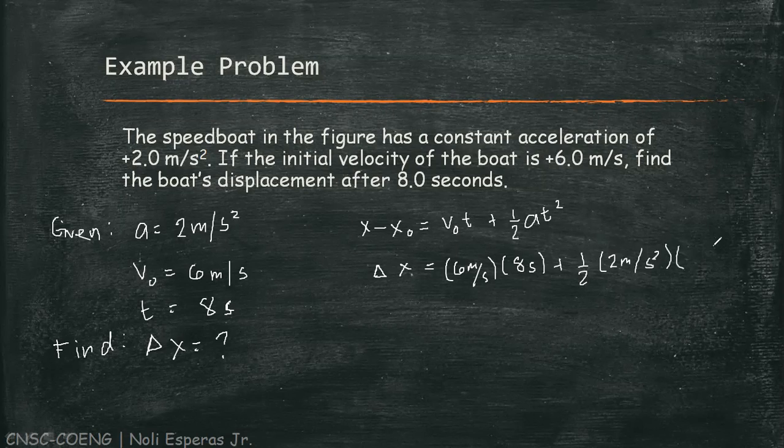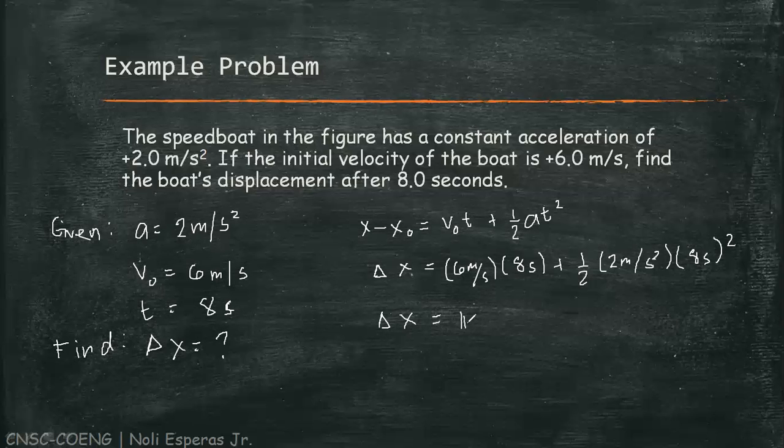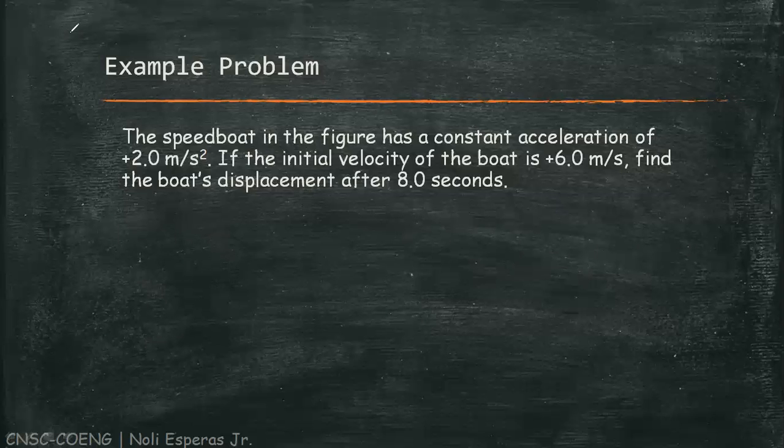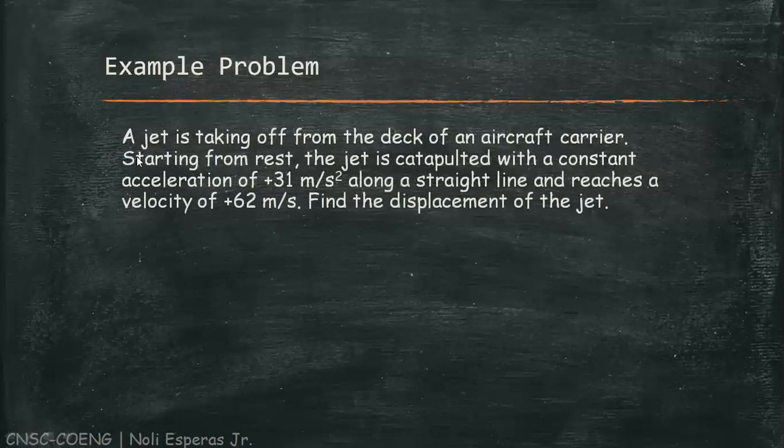8 seconds squared. Calculating, we have an answer of 112 meters. Second problem: A jet is taking off from the deck of an aircraft carrier. Starting from rest, the jet is catapulted with a constant acceleration of 31 m/s² along a straight line and reaches a velocity of 62 m/s. Find the displacement of the jet.